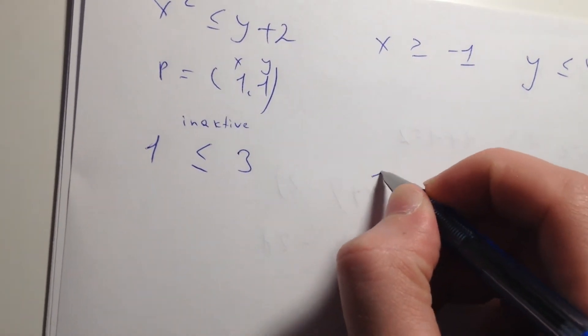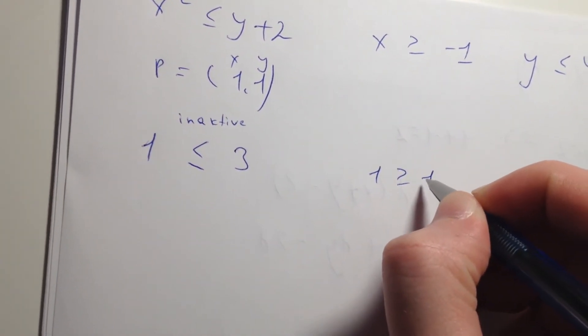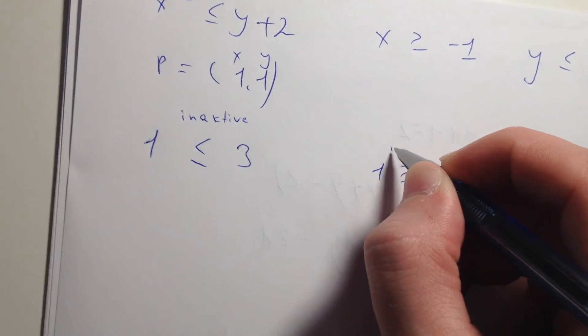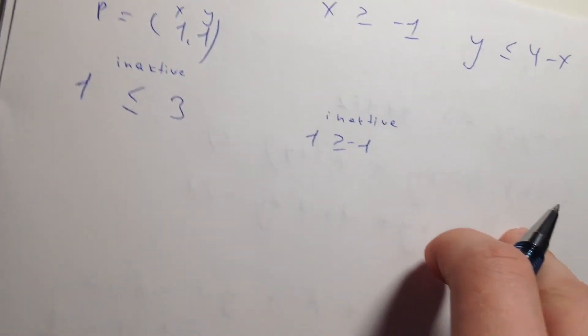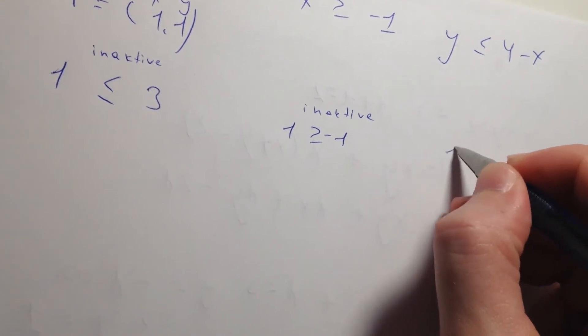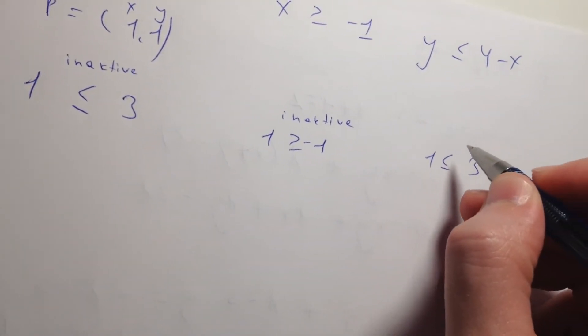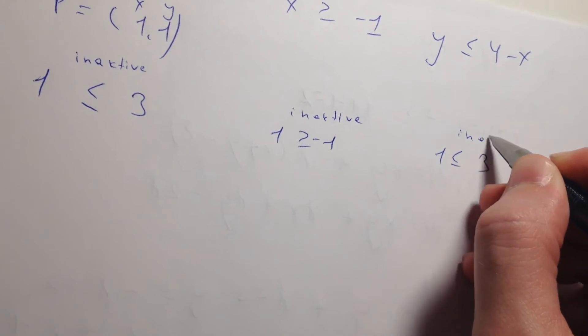Here we have 1 bigger or equal to minus 1, it's also inactive. And 1 is less or equal to 3, it's also inactive.